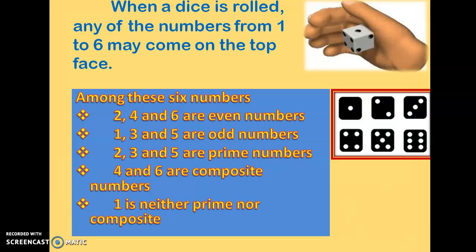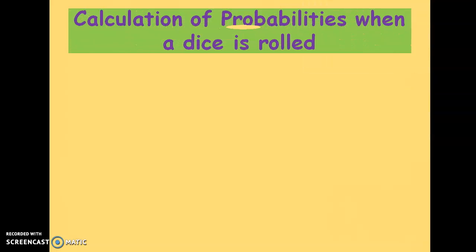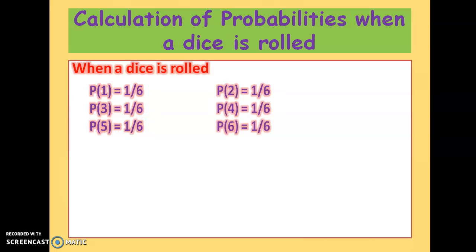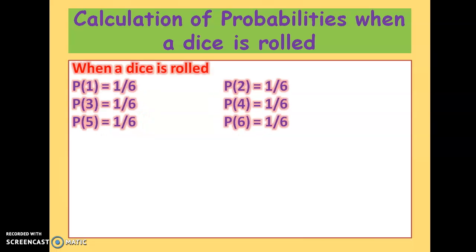As I told you, 1 is neither prime nor composite. Now let us take a problem. Before going to the problem, we have to be clear of one thing: when a die is rolled, the probability of getting 1 on the top face is 1 by 6, because 1 exists only once on a die and there are 6 possible outcomes in total.